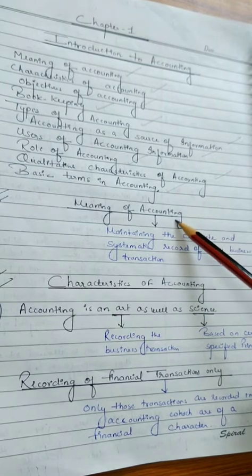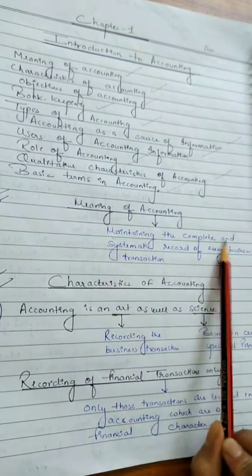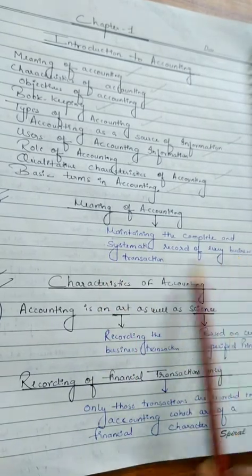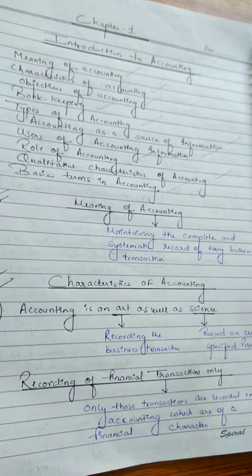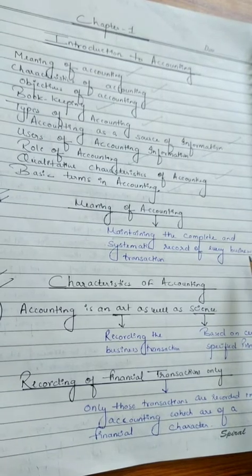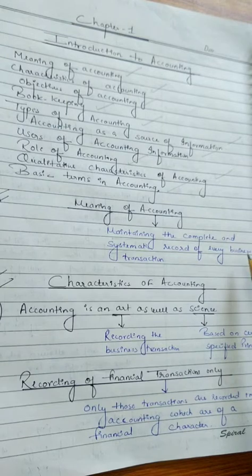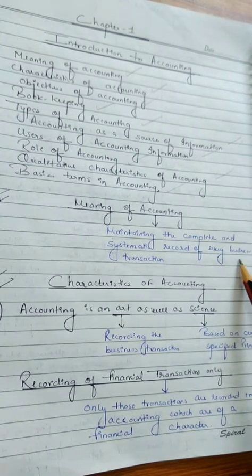Let's begin with the first topic: meaning of accounting. What is accounting? Maintaining the complete and systematic record of every business transaction is accounting. Business transaction ka ek complete and systematic record maintain rakhna hi accounting hai. Business transaction means a businessman records how many purchases and sales he made during the whole year, so that he can ascertain at the end of the year how much profit he has gained and how much loss he has suffered.